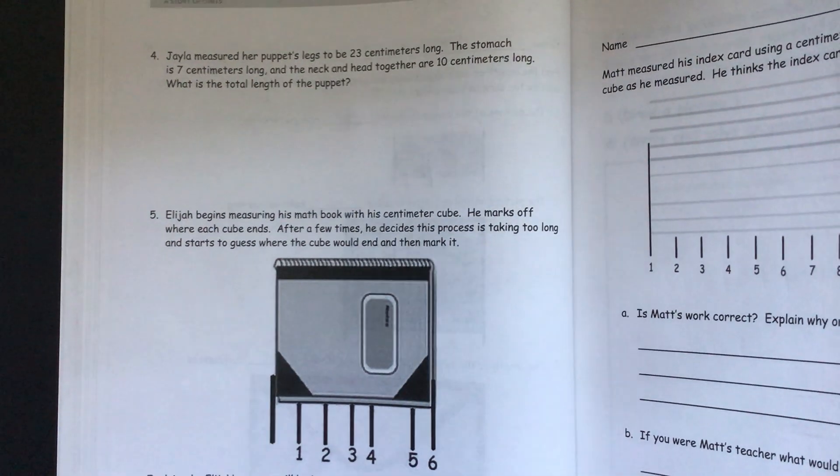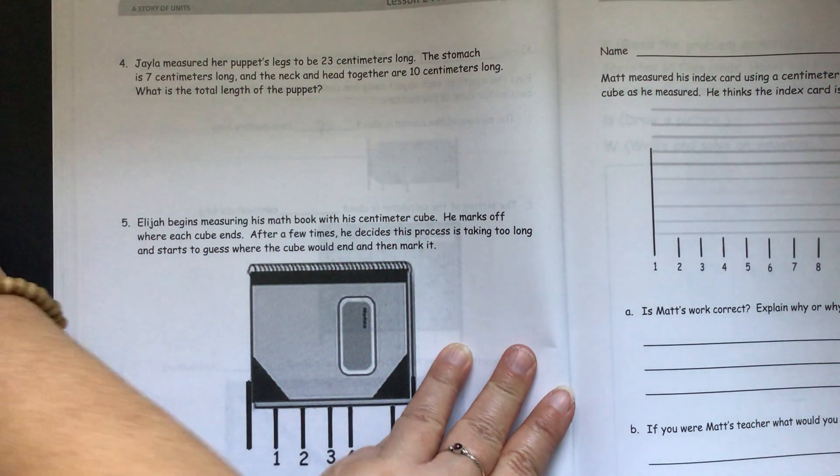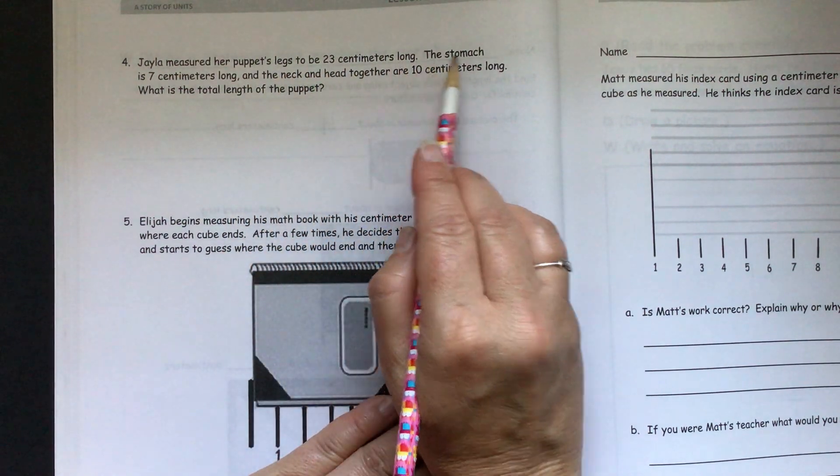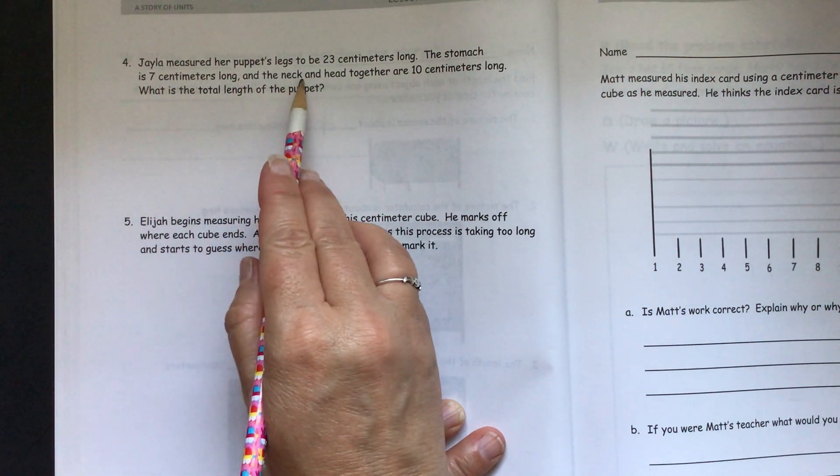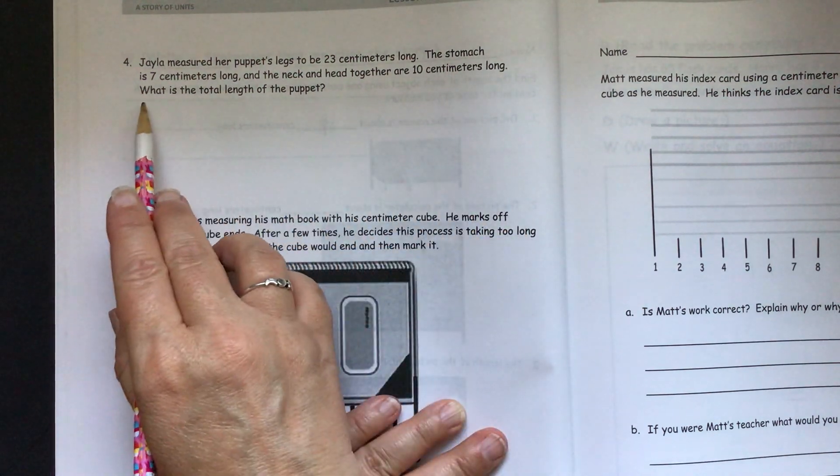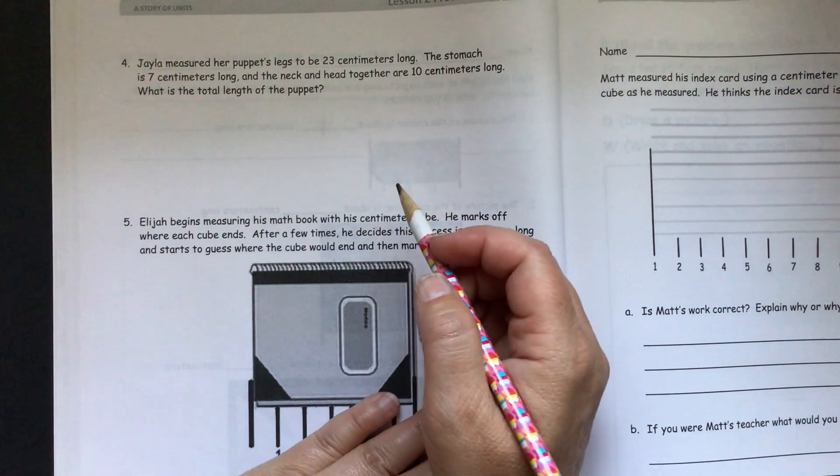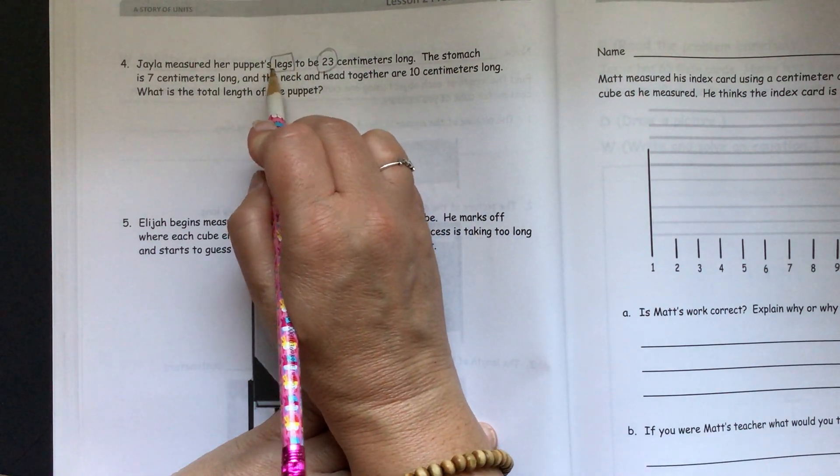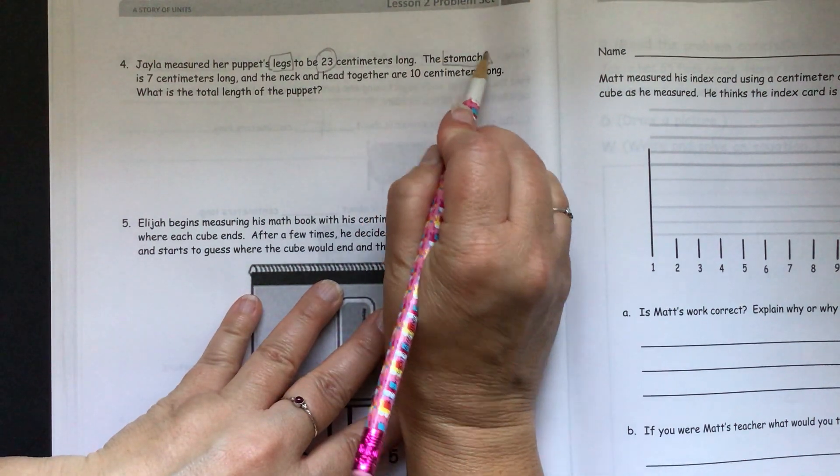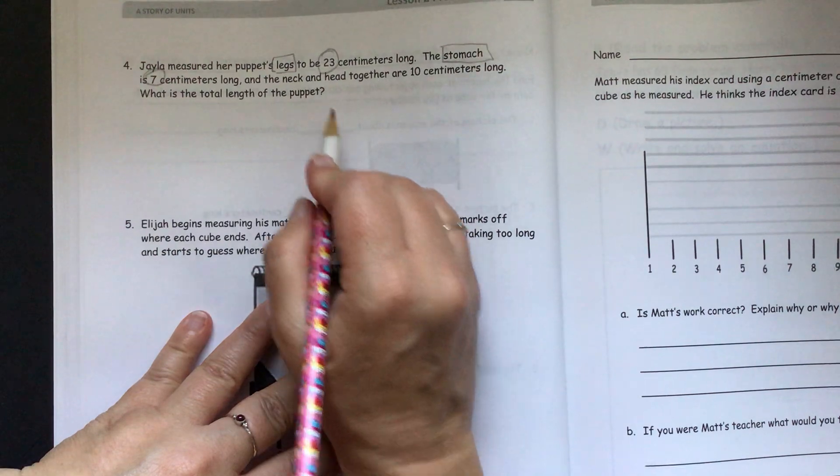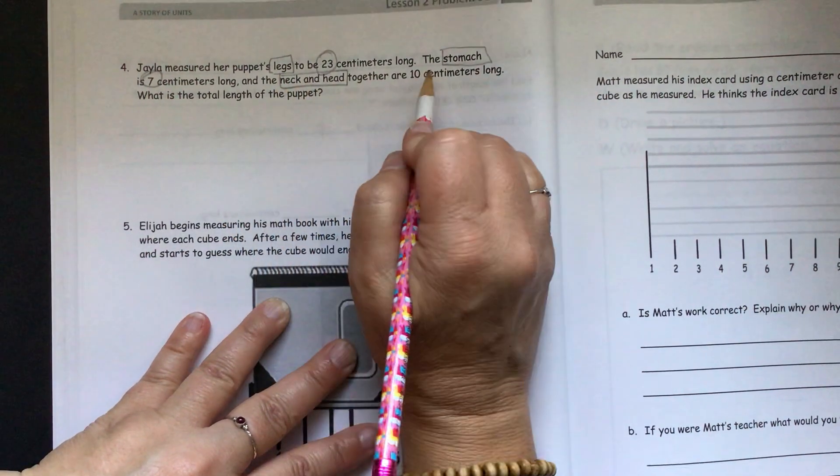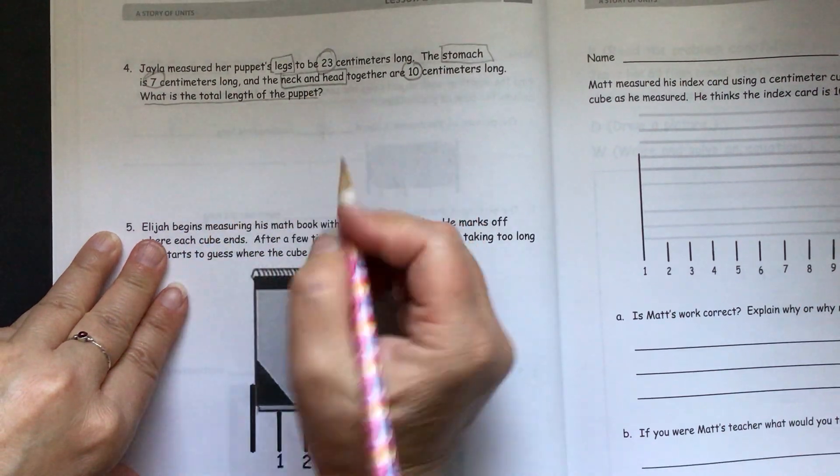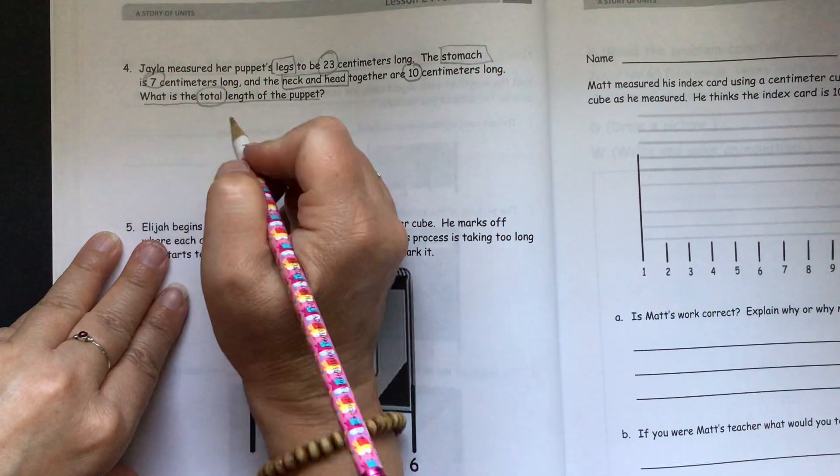And they have some word problems here. Jayla measured her puppet's legs to be 23 centimeters long. The stomach is 7 centimeters long, and the neck and head together are 10 centimeters long. What is the total length of the puppet? So circle our key information. We have 23 centimeters long for the legs, stomach is 7 centimeters long, and the neck and head together are 10 centimeters long. And our question is, what is the total length of the puppet? We have this word total. So remember total is going to tell us to add.